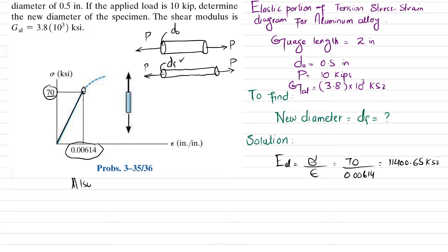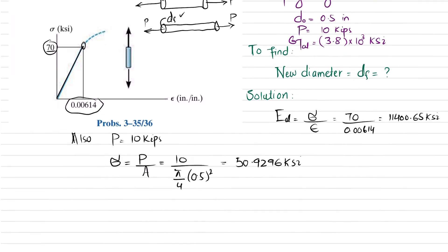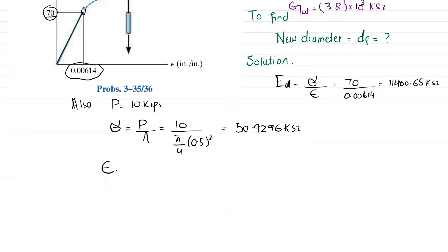We have load P = 10 kips. We can find the stress: σ = load per unit area = P / A. The area is π/4 × (0.5)². Substituting these values gives σ = 50.9296 ksi.